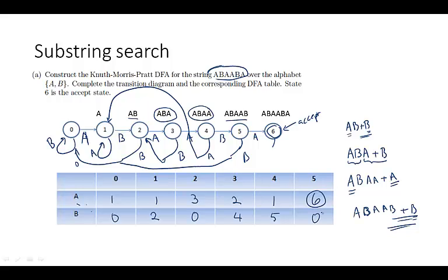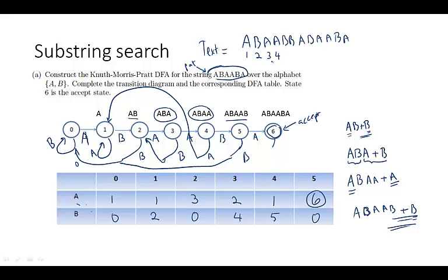Now let's show how this works with a text. Suppose we have the text ABAABB followed by ABABA. We start at state 0. Seeing A→1, B→2, A→3, A→4, B→5. Then we see another B — we're in state 5 and see B, so we go back to 0. Then seeing A→1, B→2, A→3, B→4, A→5, B→6.